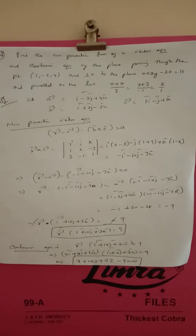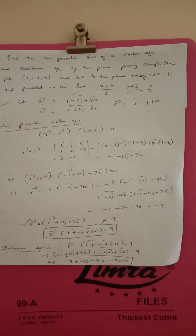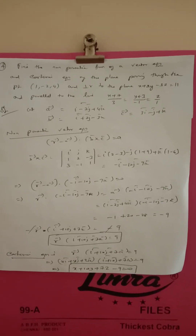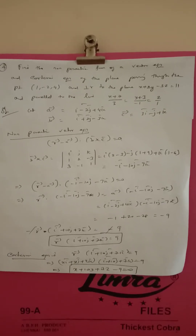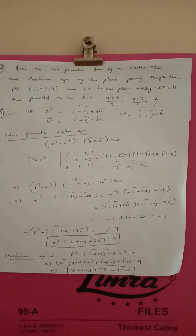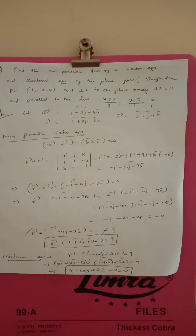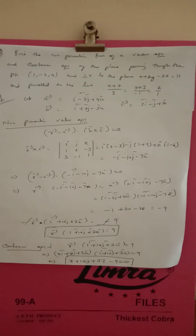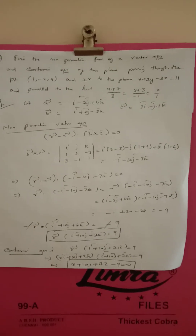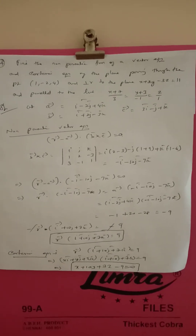We have to calculate the non-parametric vector equation. The position vector a is the point (1, -2, 4), so a vector equals i minus 2j plus 4k. The perpendicular plane gives us the normal vector b, and from the Cartesian form of the line the direction ratios are 3, minus 1, 1, so the direction vector c equals 3i minus j plus k.